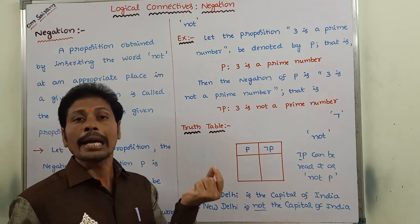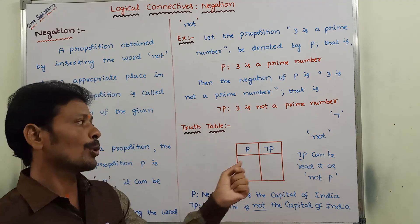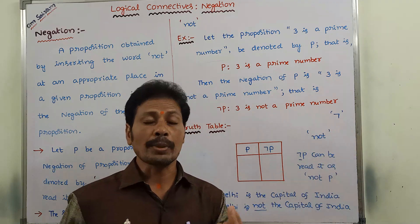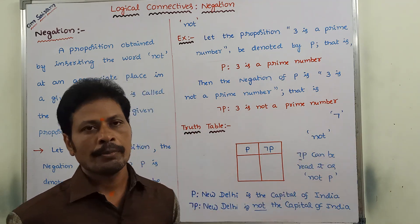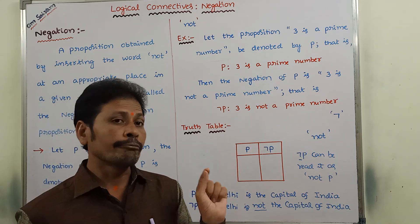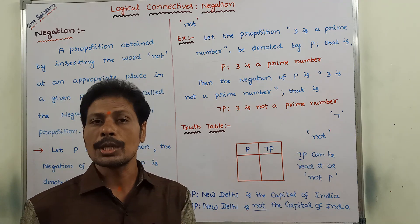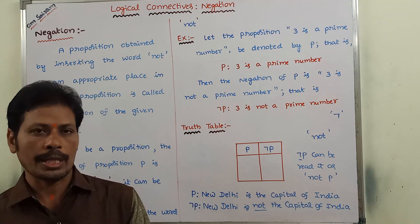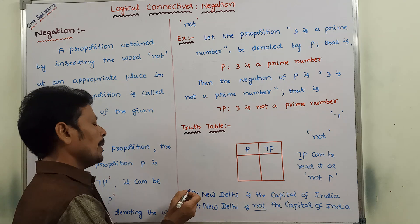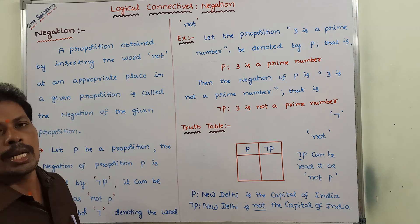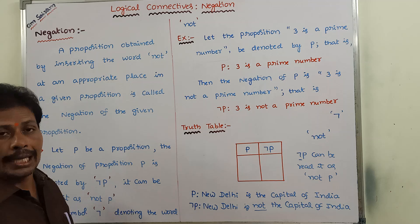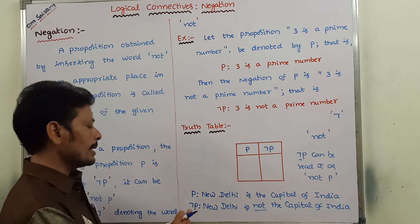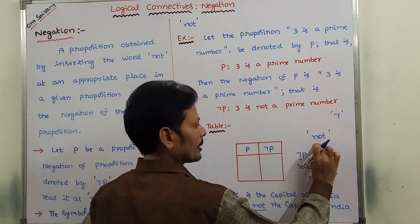For representing the negation of a given proposition, we use the symbol ¬. This symbol represents the word 'not.' By inserting the word 'not' in a given proposition, we get the negation of that proposition. So, P is a given proposition and ¬P denotes its negation.